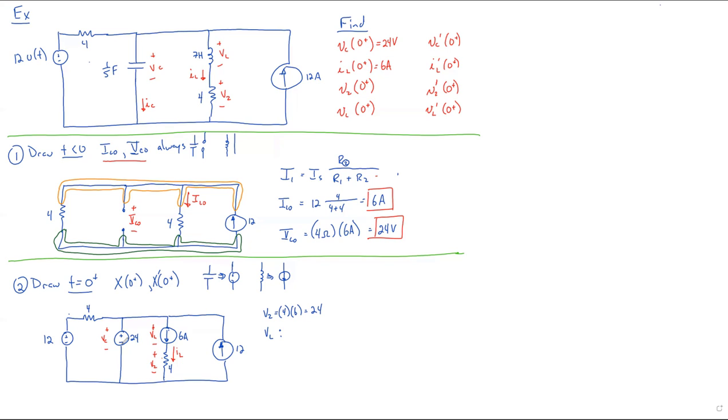So using KVL, we can do a loop right around here. And starting at this voltage source, we get minus 24, we do whatever sign we hit first, plus V sub L, plus V sub 2. And we already figured out that V sub 2 is equal to 24, equals zero.